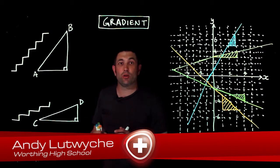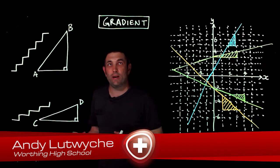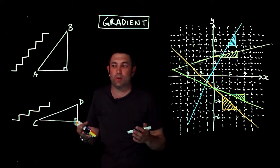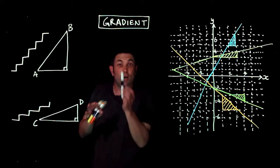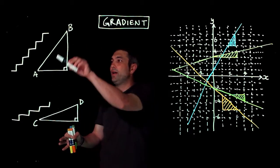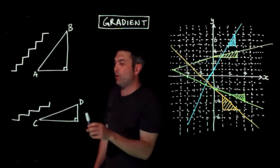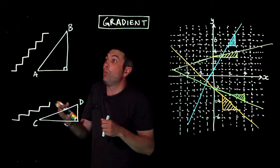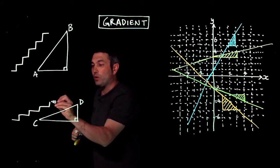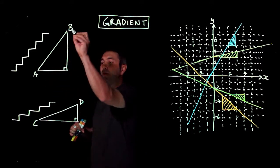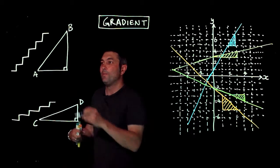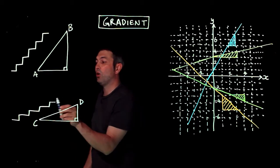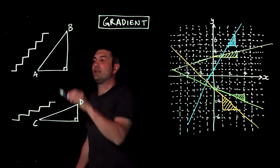In this video we're going to be looking at the concept of gradient. Gradient is the mathy word for slope or steepness of a line. I've drawn two triangles here with some steps next to them to see which one would be easier to climb — A to B or C to D. You'd probably say C to D would be easier to climb because it's less steep than A to B.